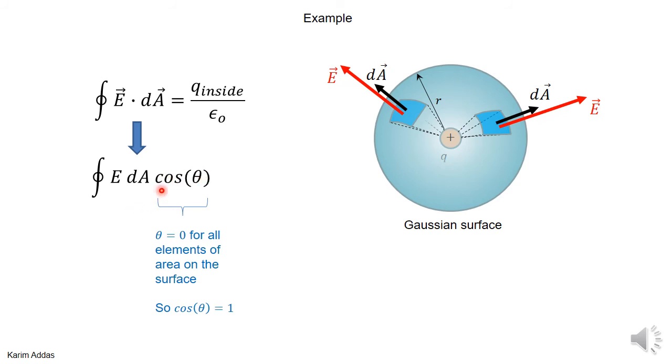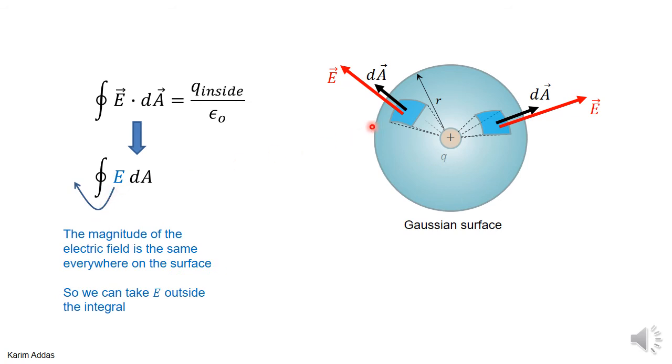Now, that doesn't necessarily guarantee by getting rid of the cosine that you're going to be able to get the electric field outside. To get the electric field outside of the integration, it's based on the fact that the electric field is from symmetry. Even though I don't know the value of the electric field at any point on the surface of the Gaussian sphere, I know that it should be the same value from symmetry. If you go any point on the sphere, go around the sphere from point to point, everything looks exactly the same.